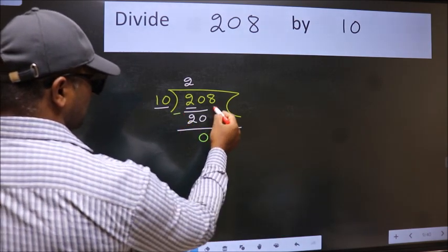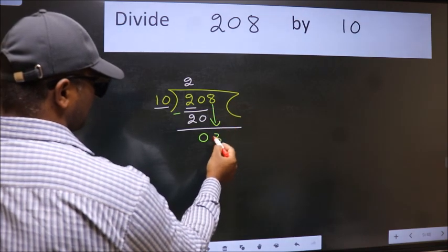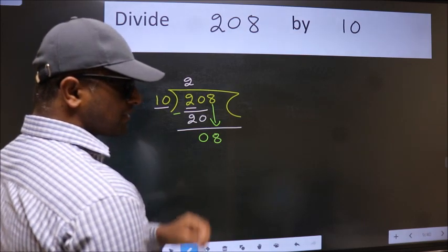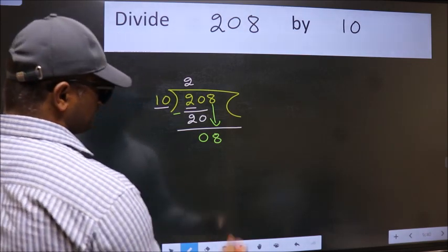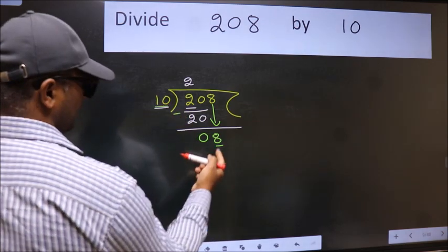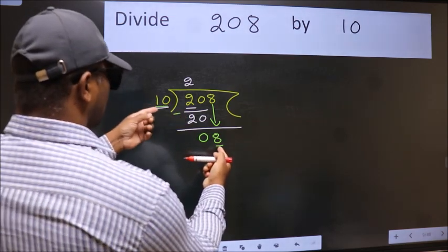After this, bring down the next number, so 8 comes down. After this step, the mistake happens. Here we have 8 and here 10. 8 is smaller than 10.